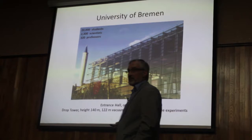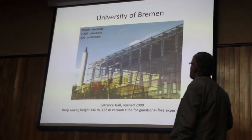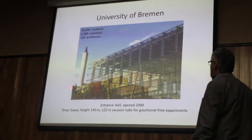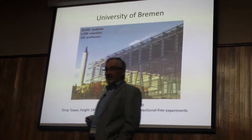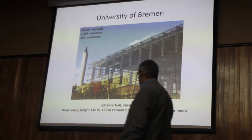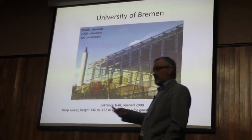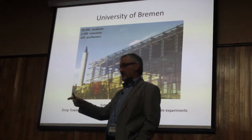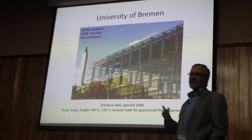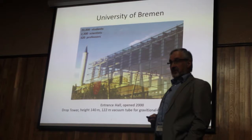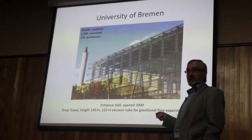The University of Bremen was founded in 1971. It has about 20,000 students, 20,300 scientists, and a bit more than 320 professors. This is the modern entrance hall of the university, and in the background you see the symbol: a drop tower, whose height is 140 meters. The impressive thing is that inside, there is a 122-meter vacuum tube for gravitation-free experiments. You put capsules on top of the tower and let them drop down in vacuum, giving 4.7 seconds of gravity-free conditions.